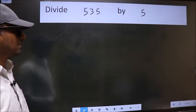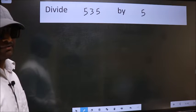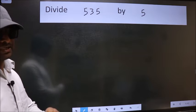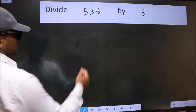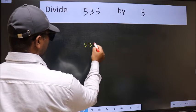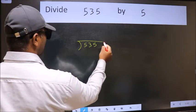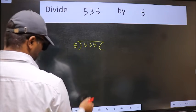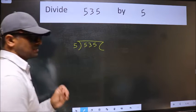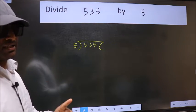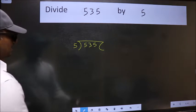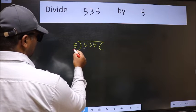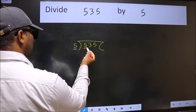To divide 535 by 5, we should frame it in this way: 535 here and 5 here. This is step one. Here we have 5 and here also 5. When do we get 5 in the 5 table? Five once five.